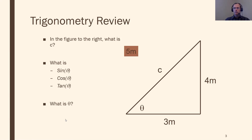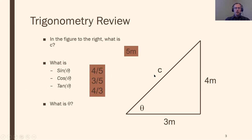For the hypotenuse C, we use the simple Pythagorean theorem. This is a right triangle, so A squared plus B squared equals C squared, giving us C equals five meters. For sine, cosine, and tangent, just remember SOH-CAH-TOA. Sine is opposite over hypotenuse — four over five. Cosine is adjacent over hypotenuse — three over five. Tangent is opposite over adjacent — four over three. To find the angle, take the inverse sine of 0.8, inverse cosine of 0.6, or inverse tangent of 1.33 — any way gives you 53.1 degrees.